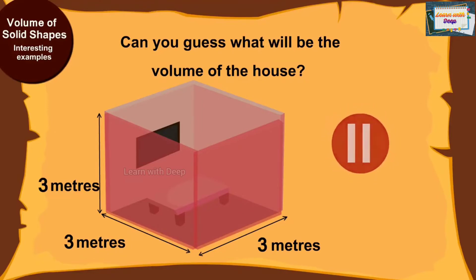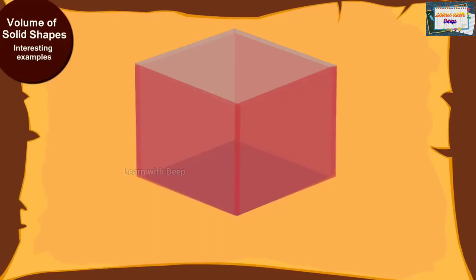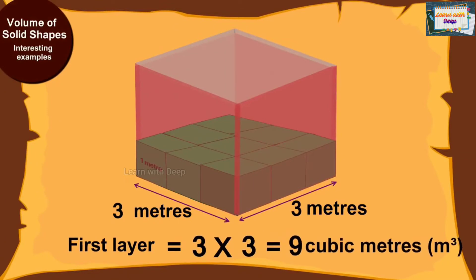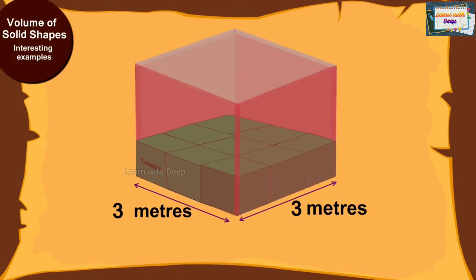The cube-shaped house has a length of 3 meters. This means that the first layer of the house will have 3 times 3, 9 meter cubes. And because the house is cube-shaped, its height will also be 3 meters.